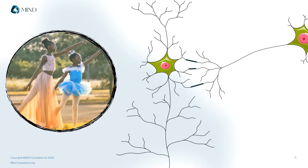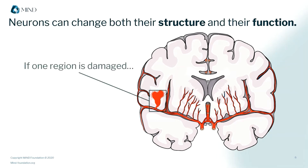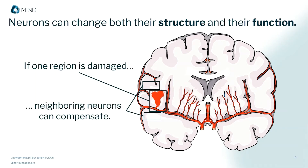Neurons can't only change their structure — they can also change their function in response to the environment. For example, if a patient has a stroke that damages particular brain regions, other neighboring regions may actually start to take over the functions of the damaged region as the person recovers. The brain cannot regrow, but it can rewire.